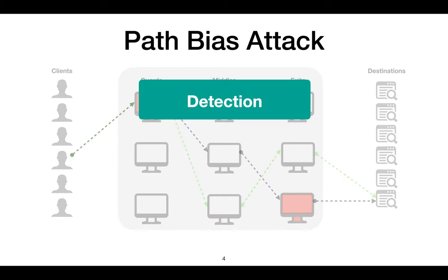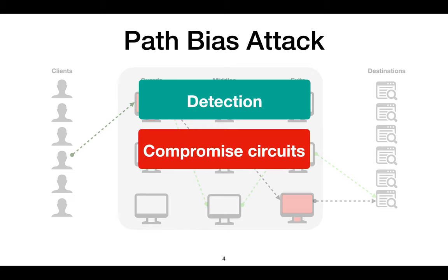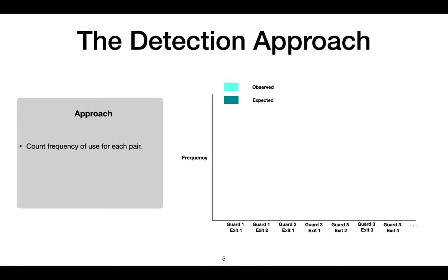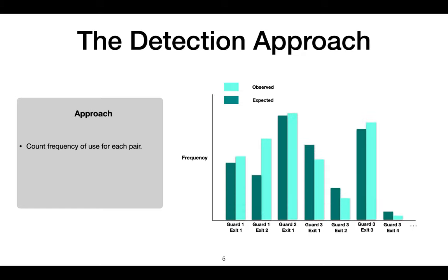Our goal in this work is to detect attacks of this form. The adversary's goal is to compromise circuits and to avoid detection. Our approach to detection will be to count the frequency of occurrence for each guard-exit pair in the observed circuits, then compare the expected frequency to the observed frequency. In this way, we can identify pairs where the observed frequency is unexpectedly high. An expected frequency distribution can be obtained using a Tor consensus document, which we found to be a reasonable choice for this comparison.